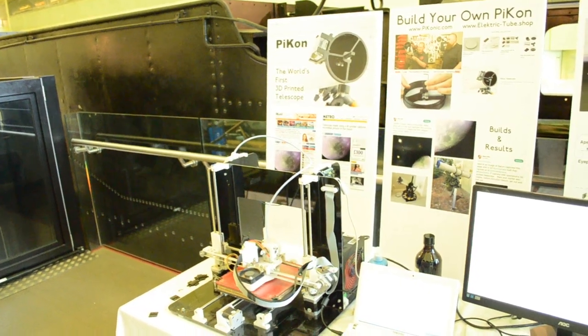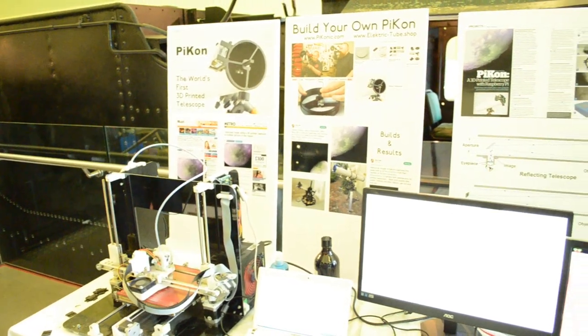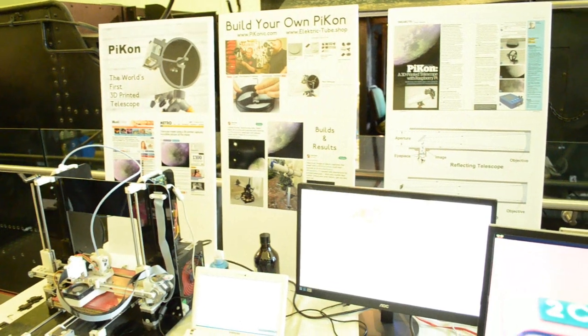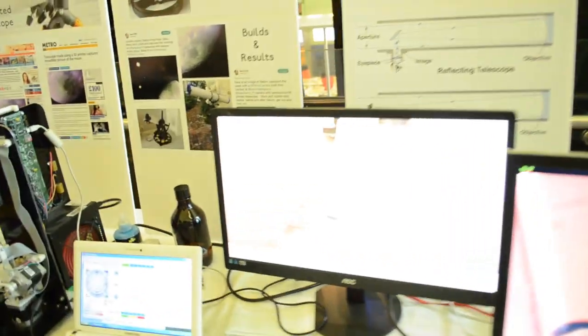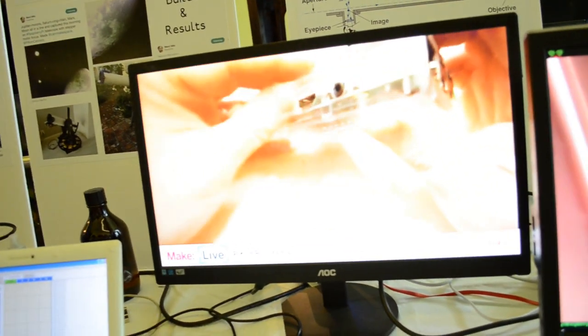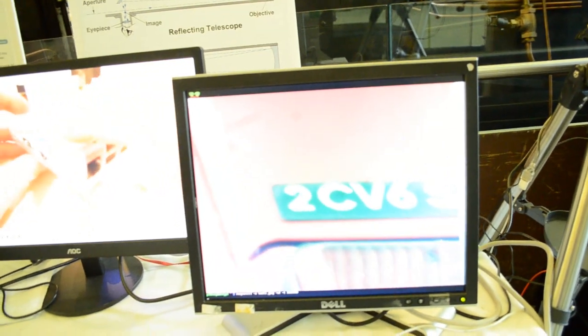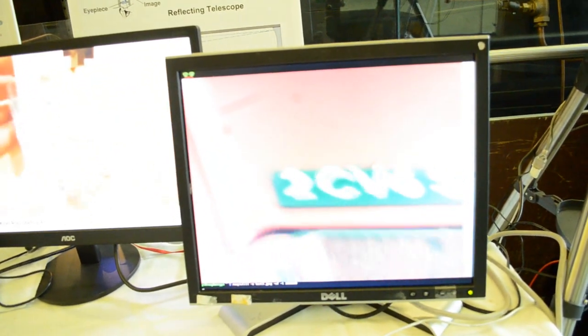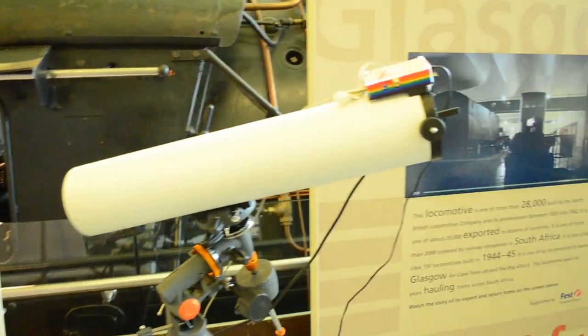Okay, so tell me your name and your company, and tell me a bit about your company. Okay, so my name's Mark Wrigley, and I have a company called Electric Tube. And my company is, I guess, a way of exploring science and lifelong learning. Well, that's exciting, yeah. So today at the makers' fair, you have a 3D printed telescope.